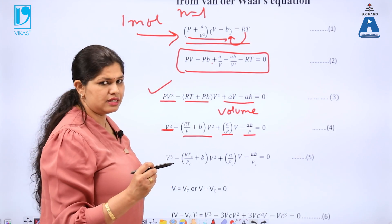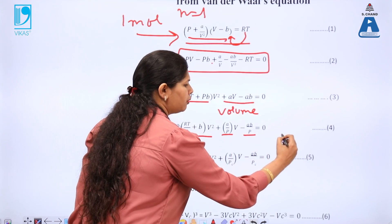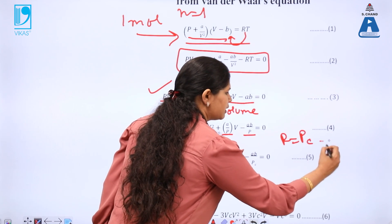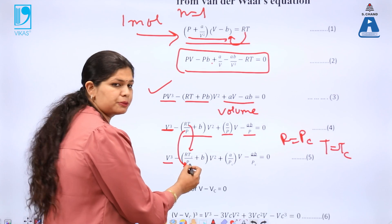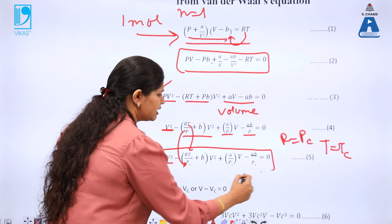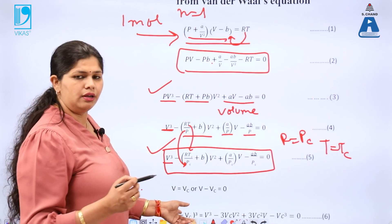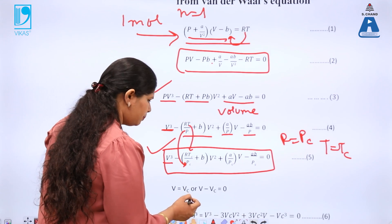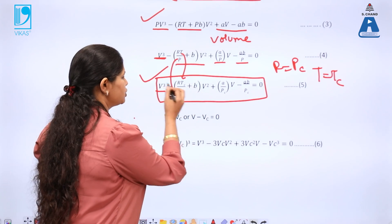After deriving this cubic form, we consider what happens at the critical point: pressure becomes the critical pressure Pc and temperature becomes the critical temperature Tc. We substitute T as Tc and P as Pc to get an expression that holds only at the critical point, where volume also becomes Vc.